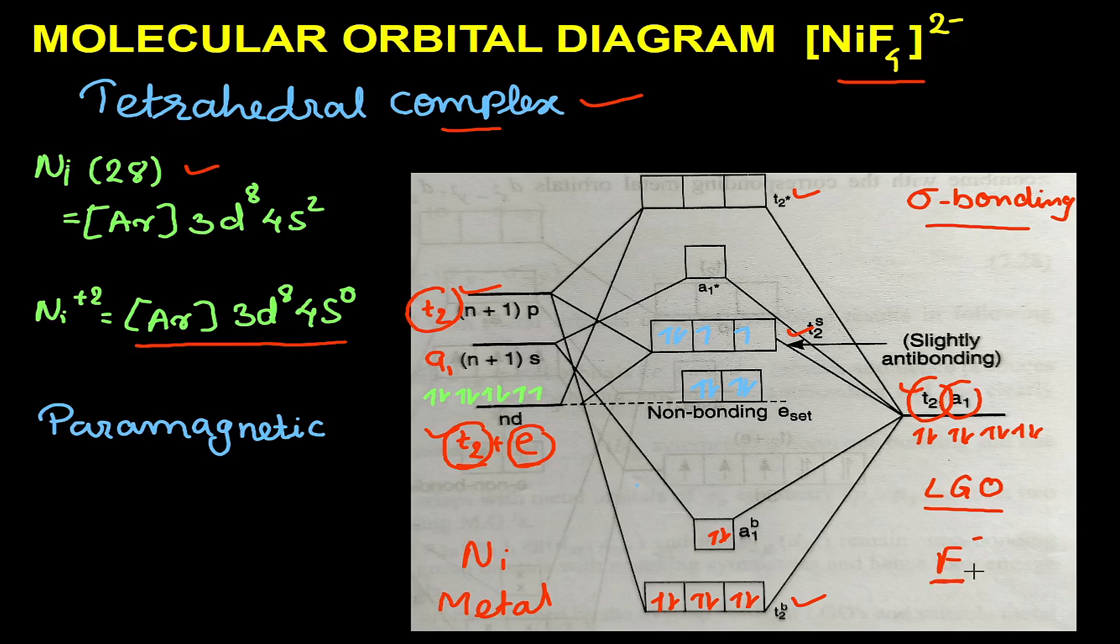Fluorine is the ligand and there are four fluorines in this complex, bringing four pairs of electrons. These four pairs will occupy the bonding molecular orbitals. The metal, nickel, has eight electrons which will be filled in the non-bonding and slightly antibonding orbitals.